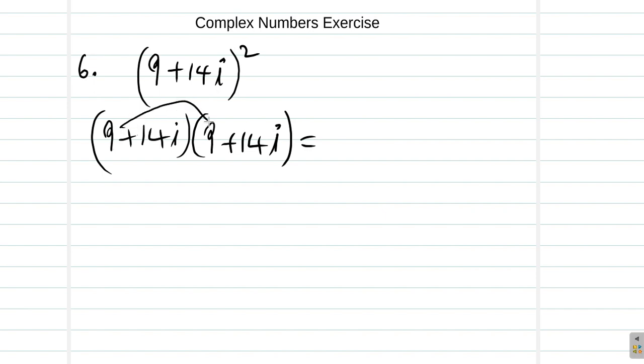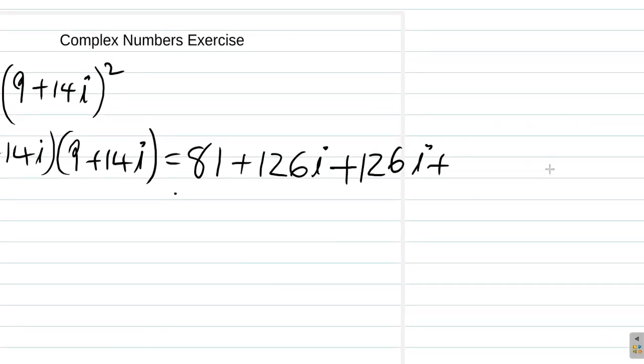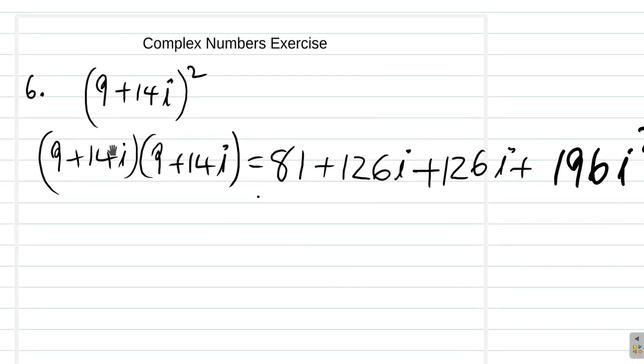What does this give you? 9 times 9 is 81, 9 by 14, so plus what is 9 multiplied by 14? It is 126i plus, and then you have 14i multiplied by 14i. That's 196, plus 196i squared, right? Because you have 14i by 14i.